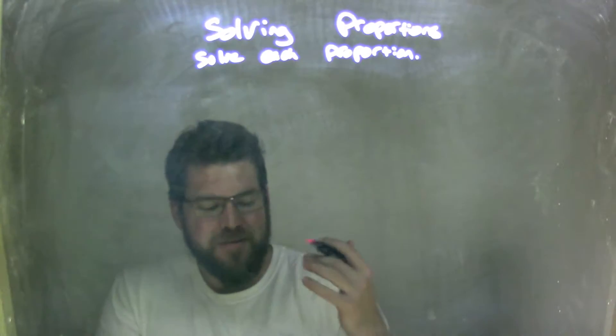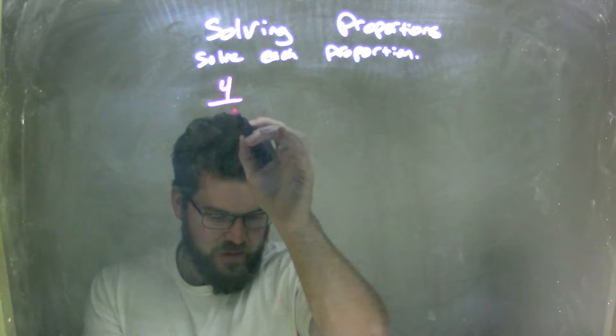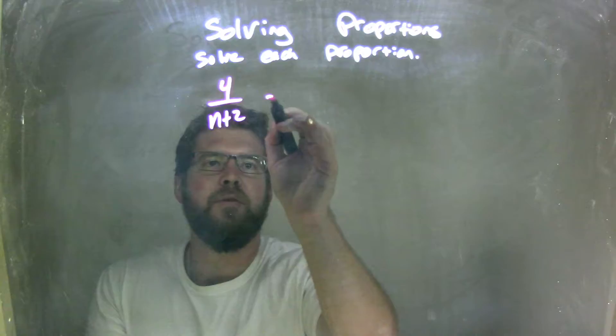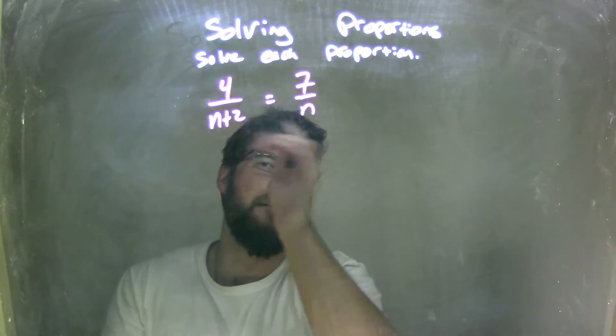If I was given this proportion, 4 over n plus 2 equals 7 over n. Not centered, but it's okay.